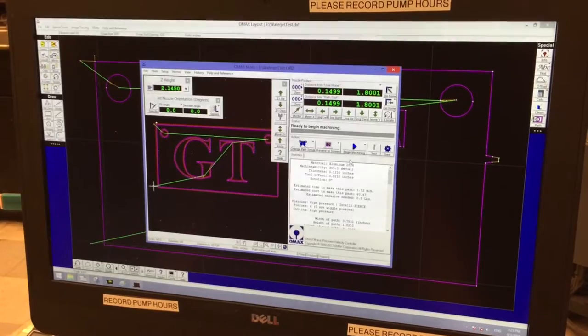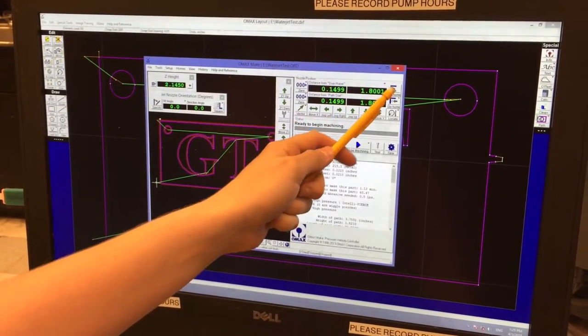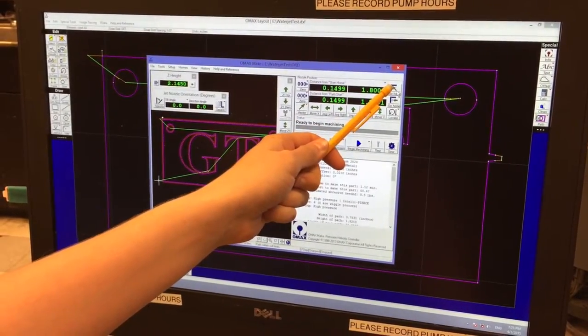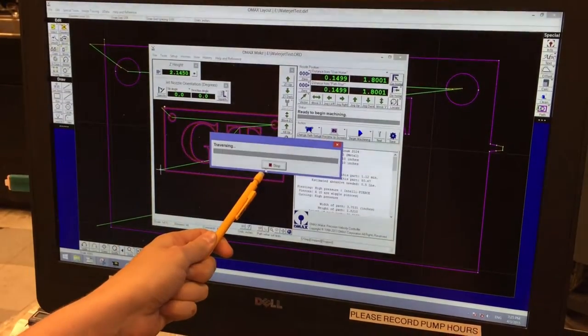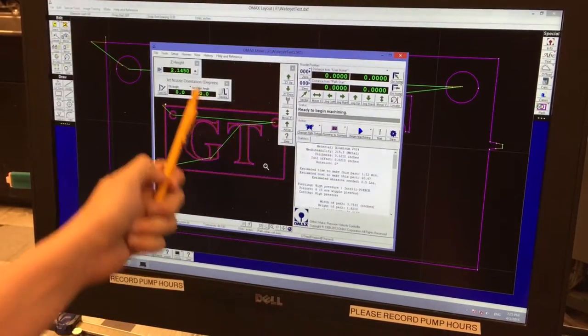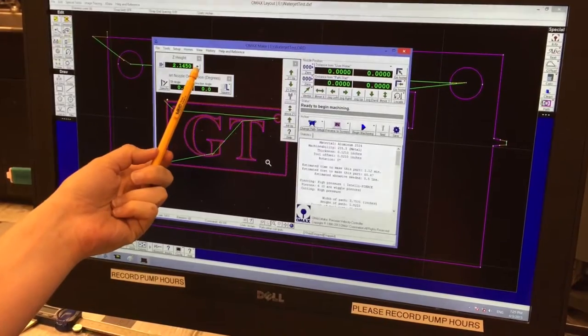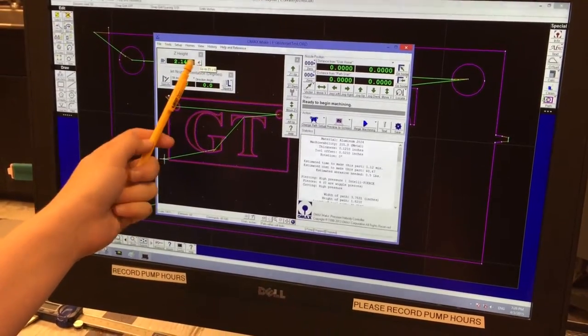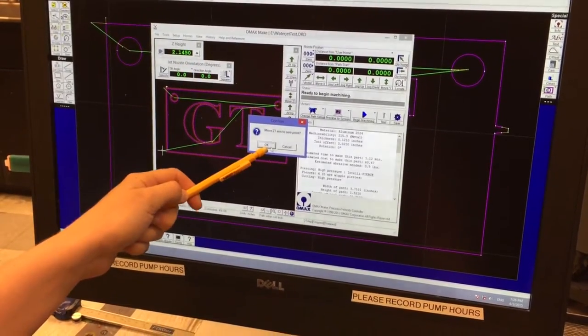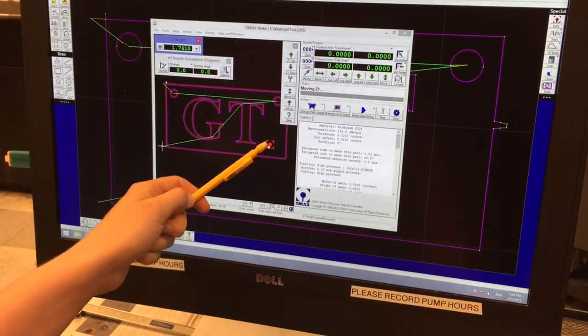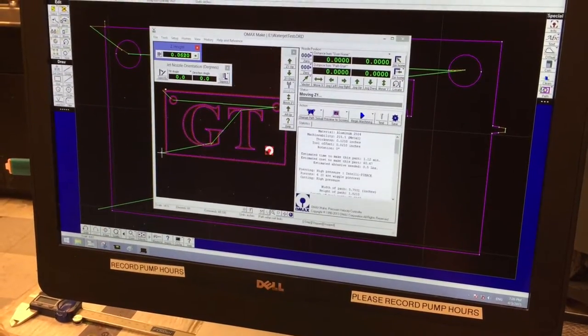When the dry run is finished, you'll need to send the nozzle back to the home position. So click go home, no, and then you'll need to set the Z height back to zero. So click the green arrow, move it to the zero point, hit OK, and then it lowers back to its original position. And now you are ready to begin machining.